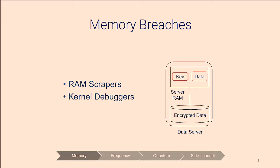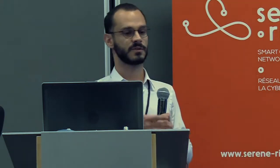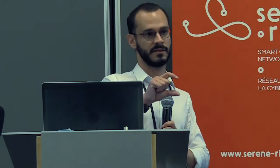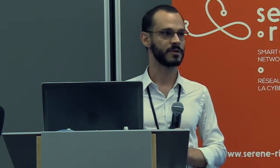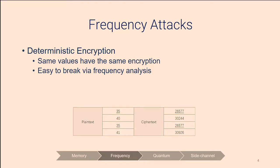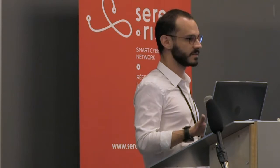For frequency attacks, imagine ancient Rome — Caesar wanted to send a letter and had to encrypt it. They encrypted each letter by mapping it to another letter of the alphabet. This technique used to be effective, but today we can break it easily because we know the frequency that each letter of the English alphabet appears. This applies to deterministic encryption, which encrypts the same plaintext to the same ciphertext value every time. By checking the frequencies of encrypted words, we can break it very easily.